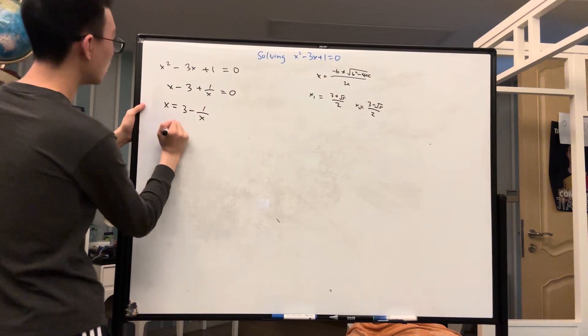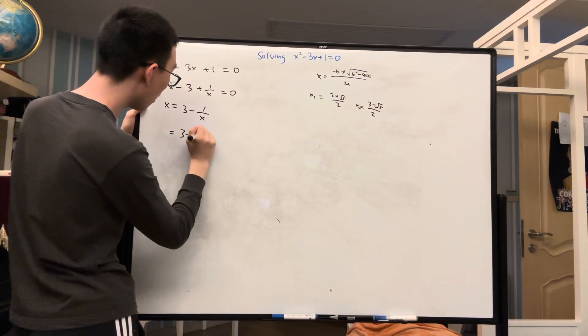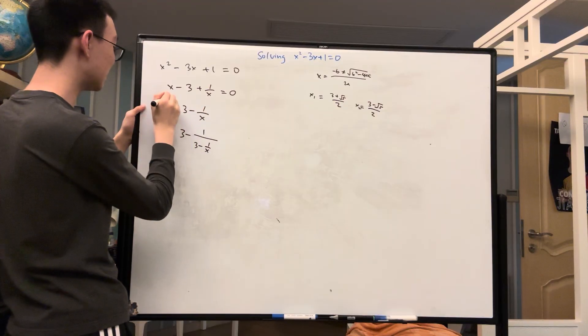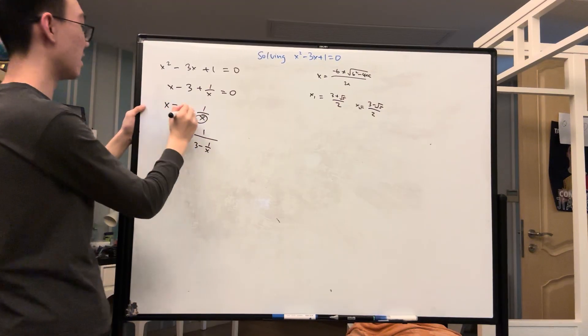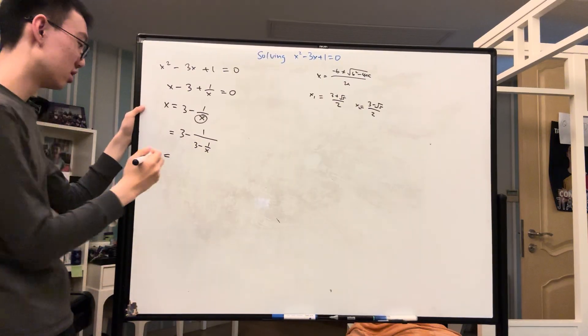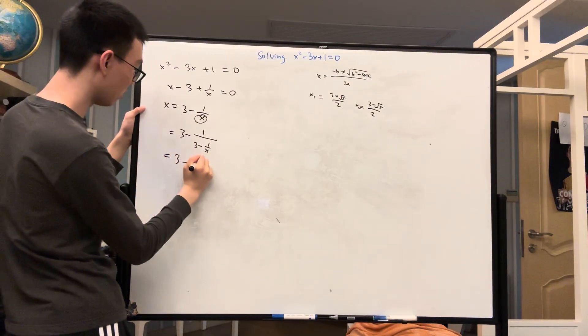But we can also express this as 3 minus 1 over 3 minus 1 over x, by plugging in x is equal to 3 minus 1 over x down here. And then we can continue this process infinitely so that we get a continued fraction.